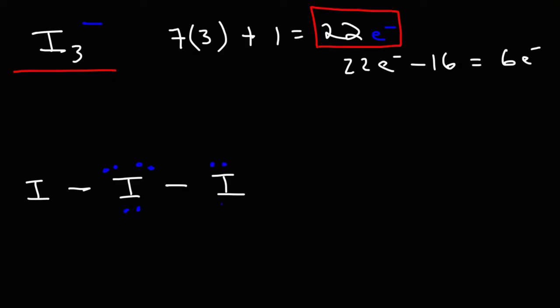Now, when iodine usually has 1 bond, typically it has 3 lone pairs. So this is going to be the Lewis structure of the triiodide ion. And if you want to, you can put it inside a bracket and then put the negative charge outside of that.